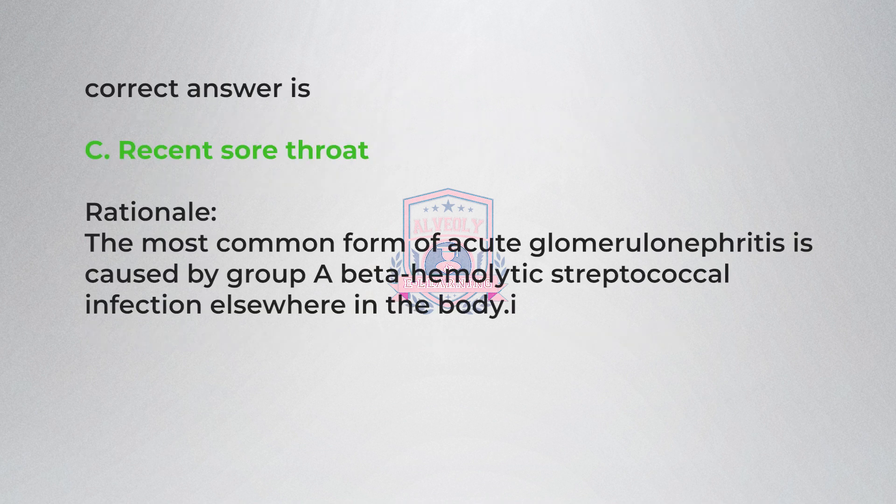Correct answer is C, recent sore throat. Rationale: The most common form of acute glomerulonephritis is caused by group B beta-hemolytic streptococcal infection elsewhere in the body.